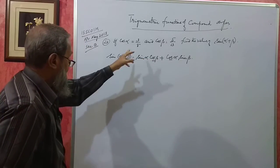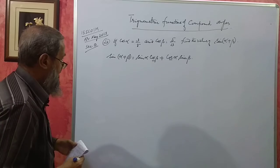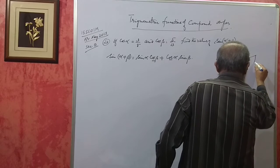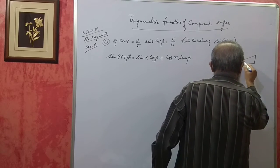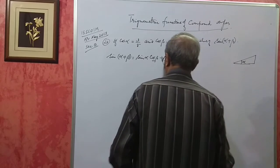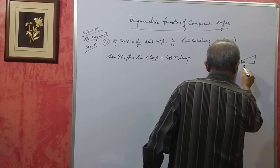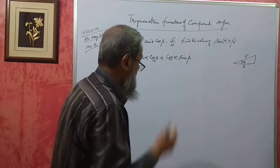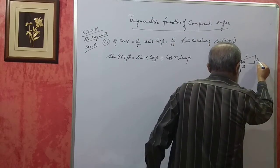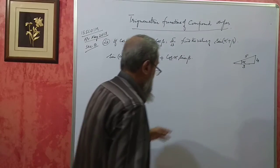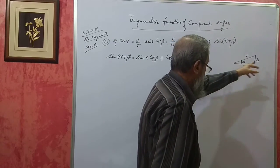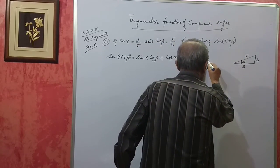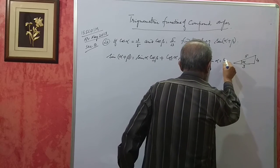Without these two values, I can't get the value of sine of alpha plus beta. So I will take the right angle triangle. For angle alpha, cos α is 3/5, so adjacent is 3, hypotenuse is 5. The opposite side will be 4 because 5² = 25, and 25 minus 9 is 16, so sin α equals 4/5.